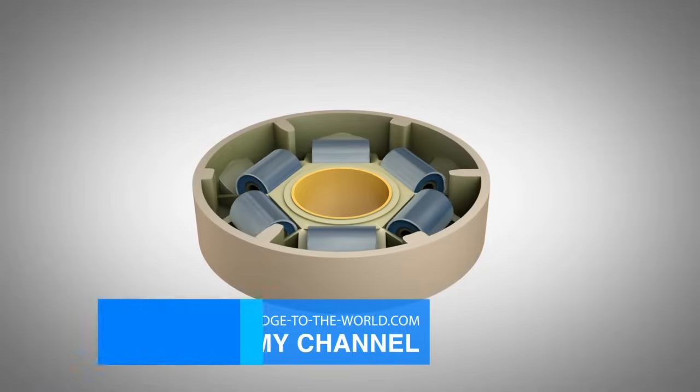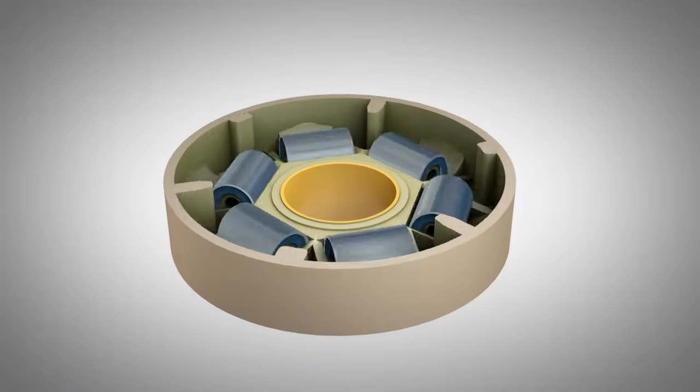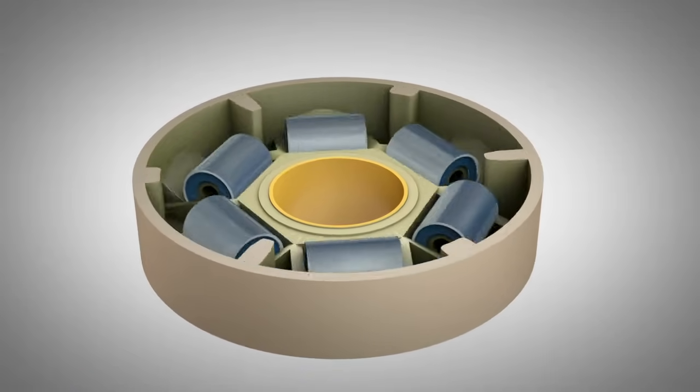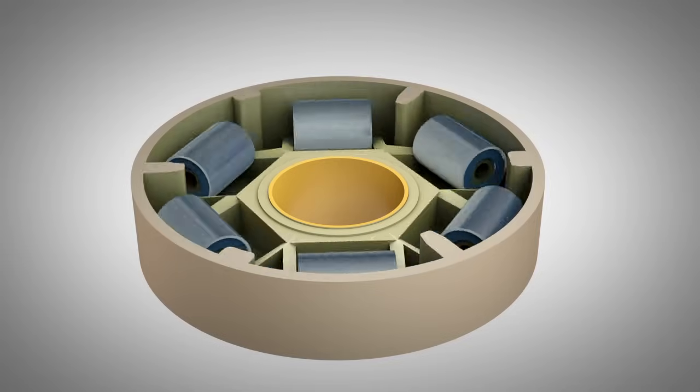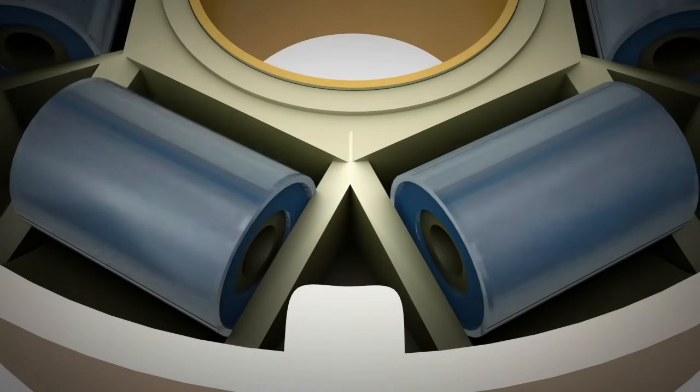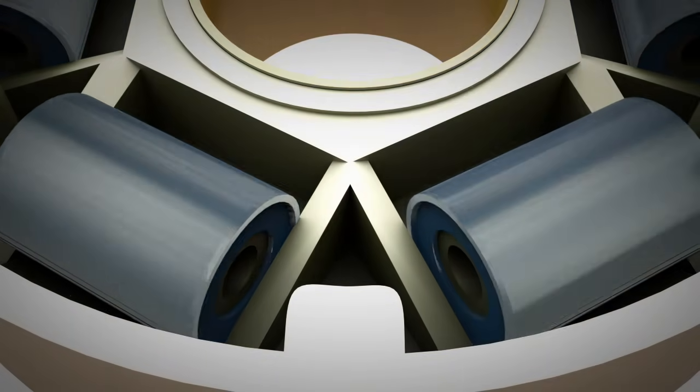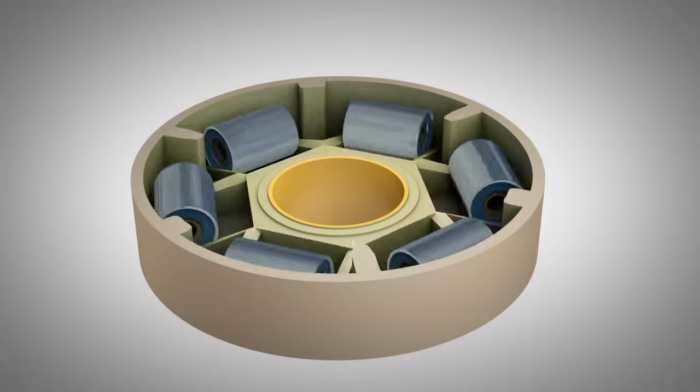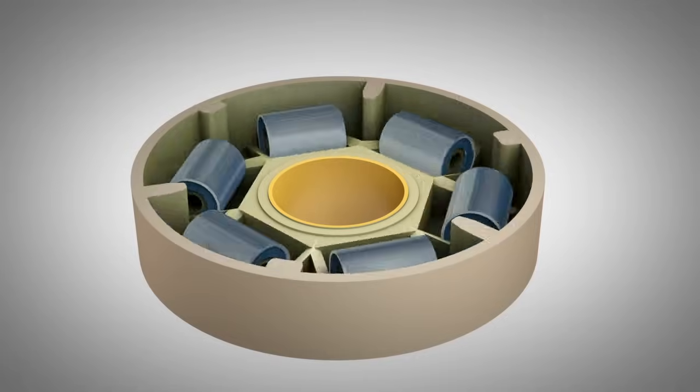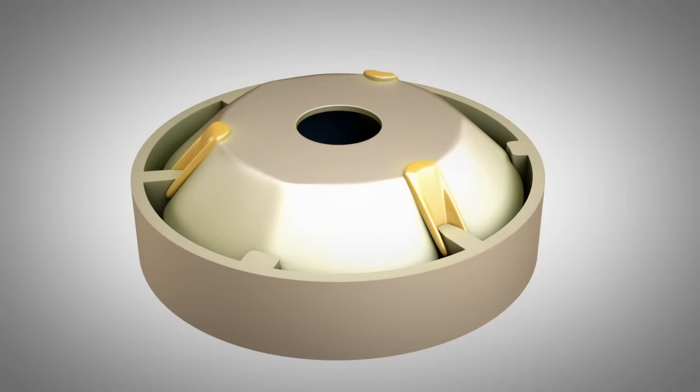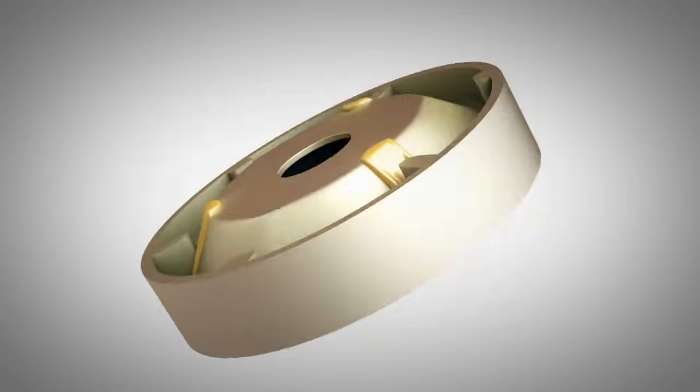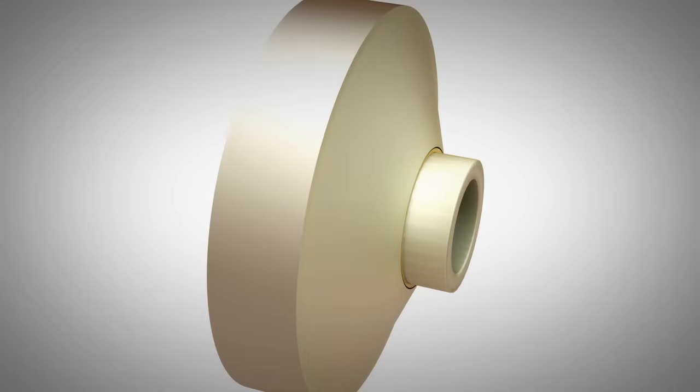As soon as the scooter moves, the pulleys turn and a centrifugal force acts on the weights. The higher the speed of the scooter, the higher the centrifugal force on the weights. When another sheave is placed on the weights, this sheave will move as soon as the weights are pushed outwards by centrifugal forces.